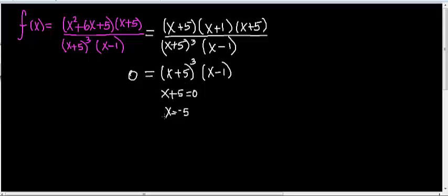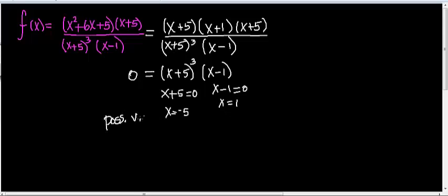The multiplicity for x equals negative 5 is 3 — it's an odd multiplicity, meaning this is a repeated zero that repeats itself three times. From x minus 1 equals 0, we get x equals 1, with multiplicity 1. Our next step is to check these possible vertical asymptotes.